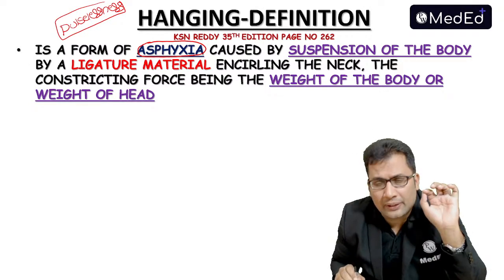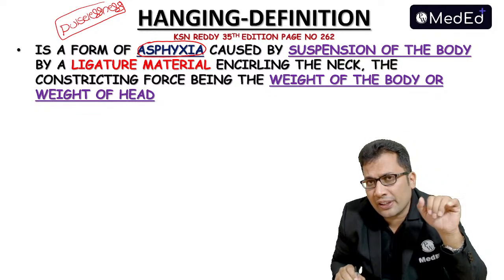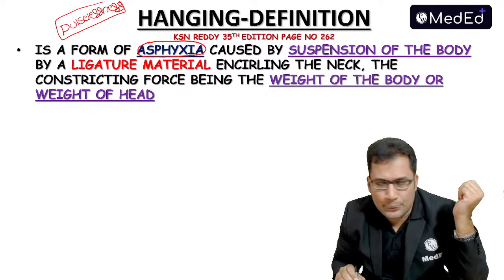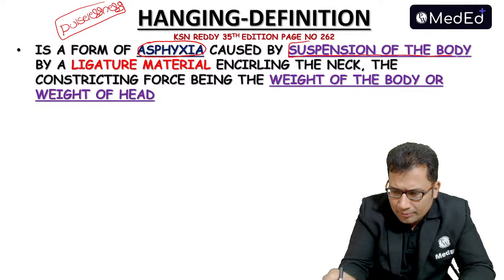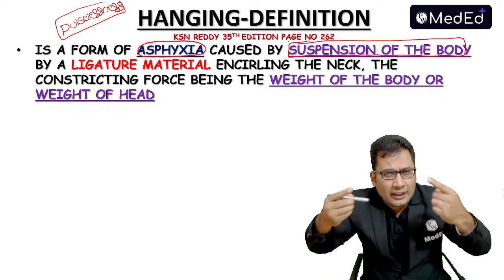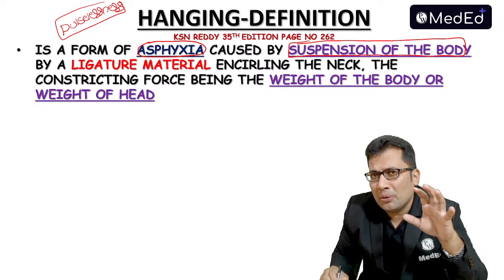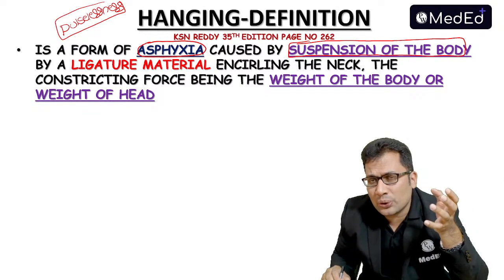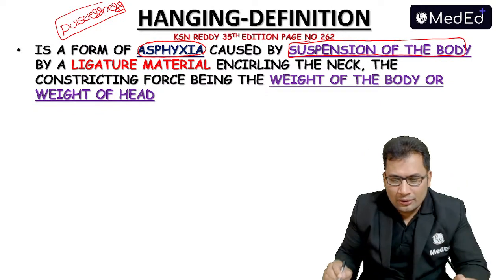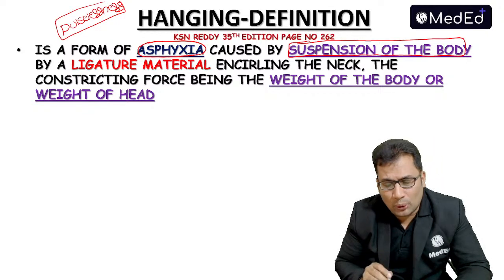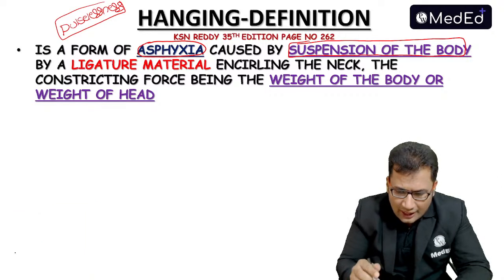The most common cause of death in case of hanging is asphyxia, or a combination of asphyxia plus venous obstruction. Remember, in case of hanging there is suspension of the body, but in case of manual strangulation or ligature strangulation there is no suspension of the body. The constricting force is the weight of the body in case of complete hanging.